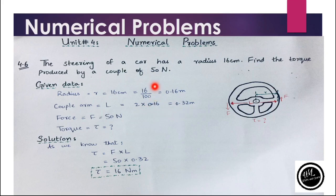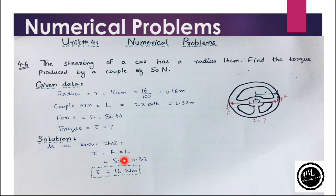The force was 50 Newton and we have to find the torque. Torque equals force cross L, where L is the moment arm. Putting in the values, the torque equals 16 Newton meter.